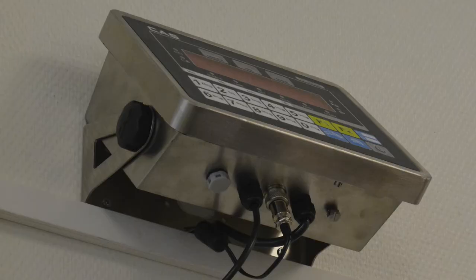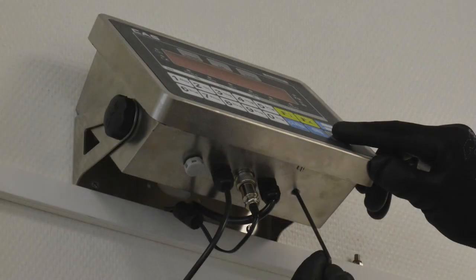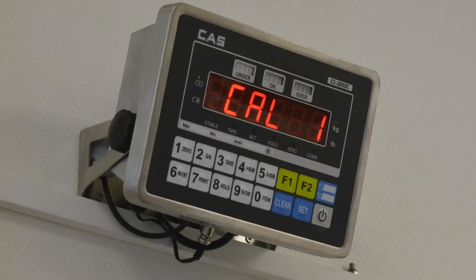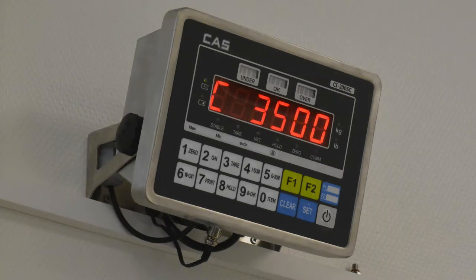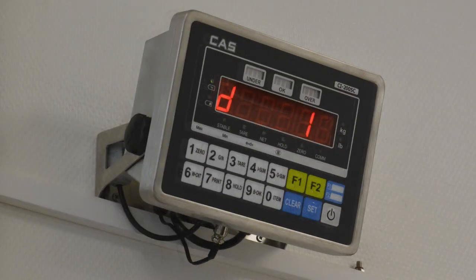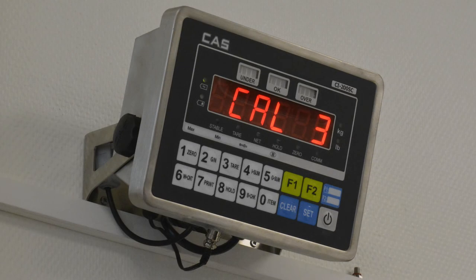Now we want to access the weight setup mode. Remove the sealing screw to see the hidden button. First, use a tool to push the hidden button. Keep this button pushed while pressing the power button. Hold the hidden button until the display shows CAL1. Press SET. Now fill in the maximum weight on the load cell as a measuring range. In this case, we calculated it to 3,500 kilograms. Now press SET. For CAL2, we used setting 1.